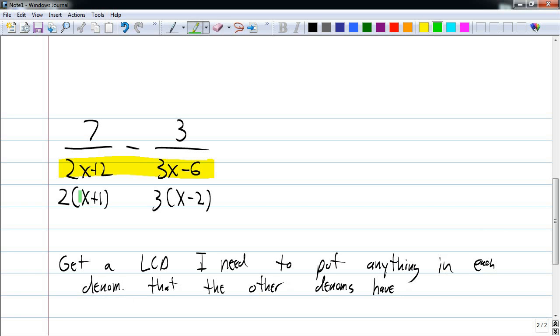For instance, this denominator has an x plus 1. This denominator has an x minus 2. So if I want an LCD, I need to multiply this denominator with x plus 1. So that it also has an x plus 1. Likewise, I have x minus 2 here and no x minus 2 in this denominator. So I need to multiply this denominator by x minus 2. And what you do in the denominator, you also have to do in the numerator.